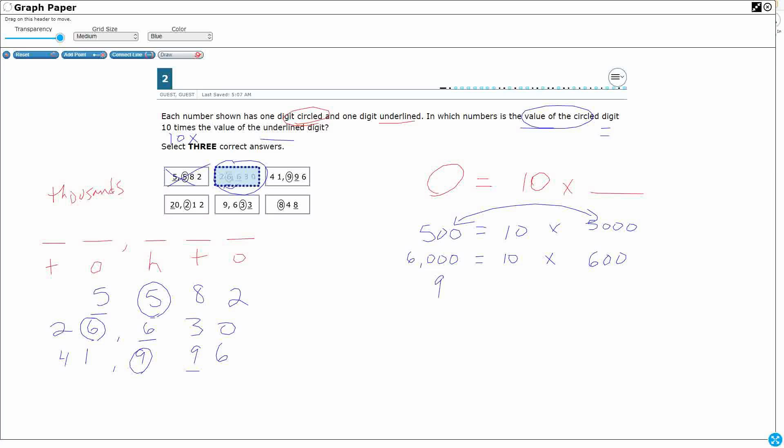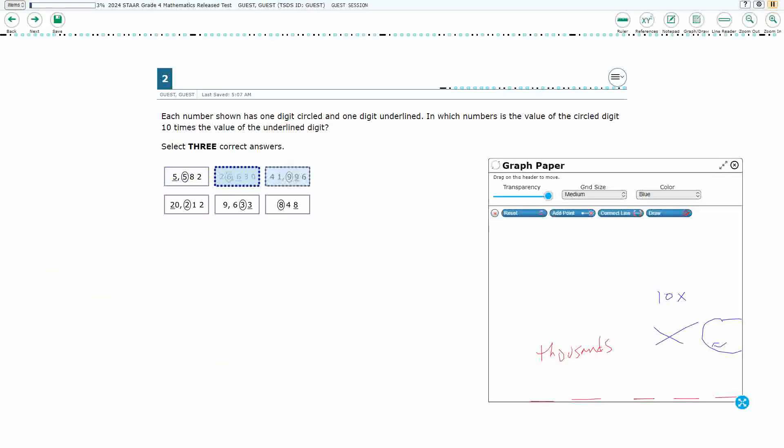So that 9 in the hundreds place is going to equal 10 times the 9 in the tens place. That's 90. 900 equals 10 times 90? Yeah. You just add a 0 and you're good to go. So that one also works.